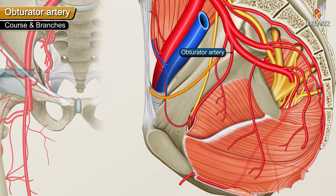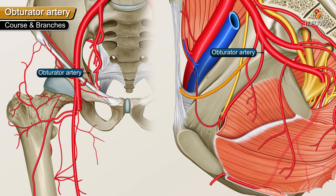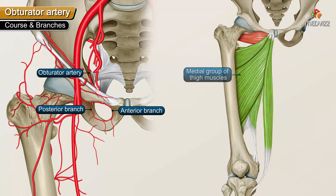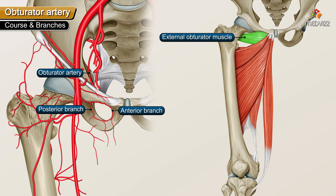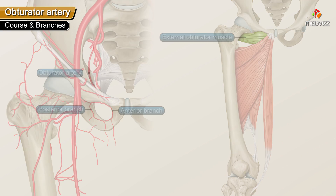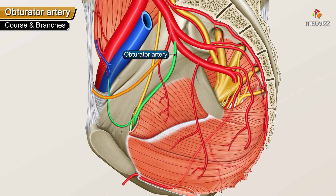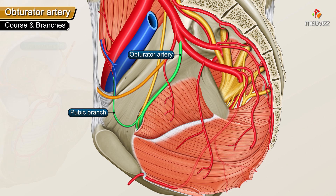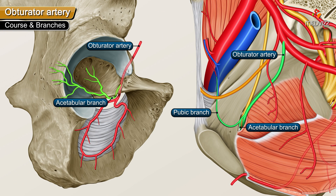Then the obturator artery runs to the thigh, dividing into an anterior and posterior branch to supply the muscles of the medial group of the thigh and the external obturator muscle. The obturator artery gives off two side branches: the pubic branch and the acetabular branch.